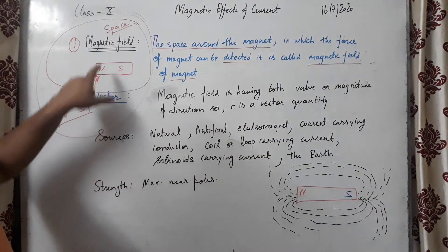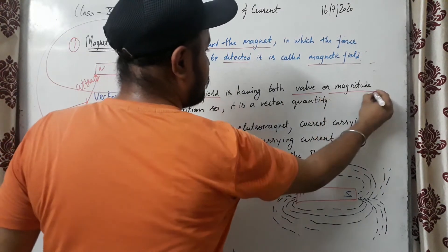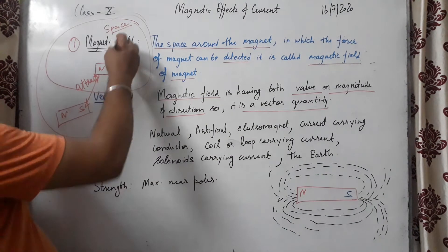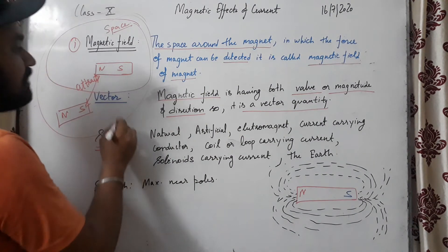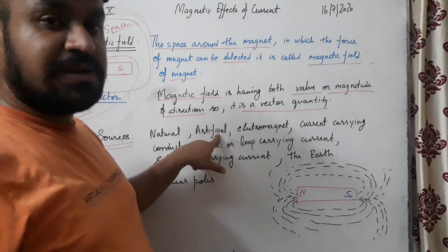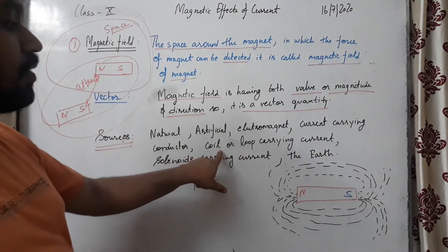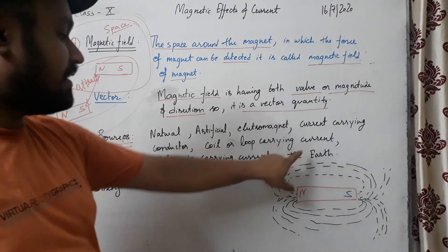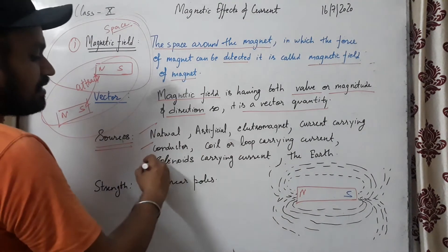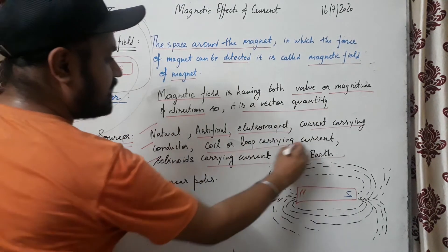Since the magnetic field has both magnitude and direction, it is a vector quantity. Now, the sources of magnetism include: natural occurring magnets, artificial magnets, electromagnets, current carrying conductors, a coil or loop carrying current, a solenoid, and the Earth. All of these are considered sources of magnetic field, and we will be studying all of them in this chapter.